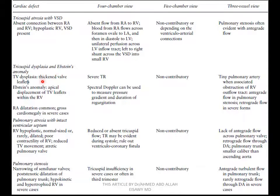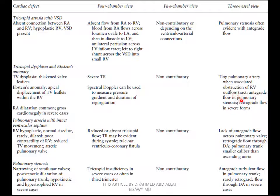Tricuspid dysplasia is Ebstein's anomaly. Tricuspid valve dysplasia involves thickening of the valve leaflets. Ebstein's anomaly is characterized by apical displacement of tricuspid valve leaflets within the right ventricle. In the four-chamber view, we see severe tricuspid regurgitation. Spectral Doppler can be used to measure pressure gradient and duration of regurgitation. The five-chamber view is non-contributory. The three-vessel view shows a tiny pulmonary artery when associated with obstruction of the right ventricular outflow tract, with antegrade flow interval in pulmonary stenosis and retrograde flow in severe forms. Right atrial dilatation and gross cardiomegaly are seen in severe cases.